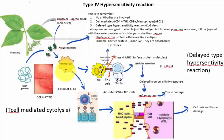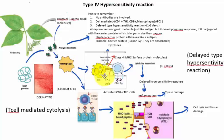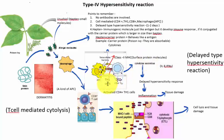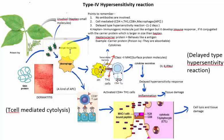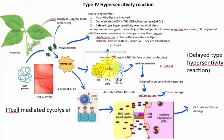Then the antigen presenting cell engulfs the allergen molecule and presents it on the surface via a class II MHC protein. The antigen presenting cell in this case is the macrophage. When a person gets in touch with the leaf, the allergen molecule is engulfed by the macrophage, and it is presented on the surface by the help of an MHC class II protein.